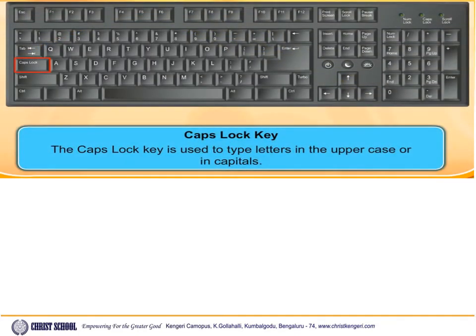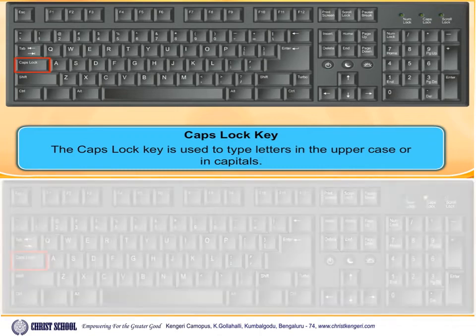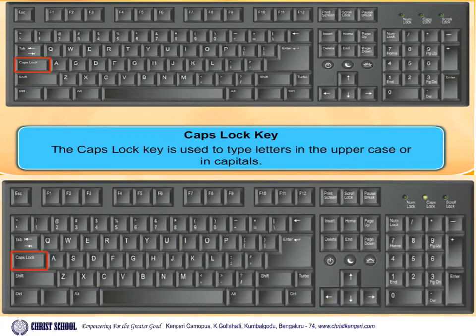What is the use of the Caps Lock key? The Caps Lock key is used to type letters in upper case or in capitals. When the Caps Lock key is switched on, you can see a light blinking on the keyboard on the upper right side.